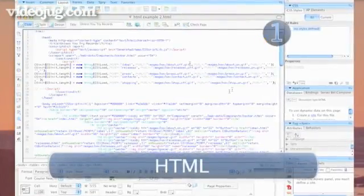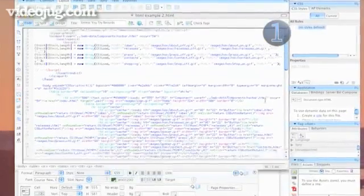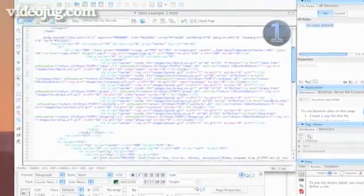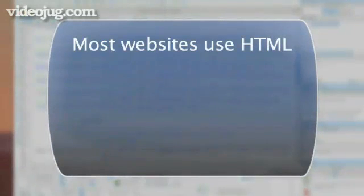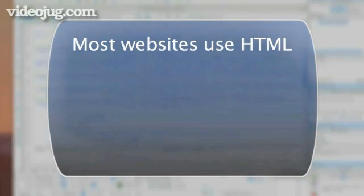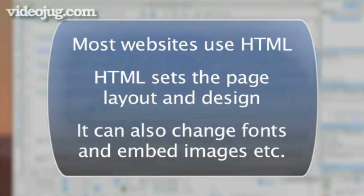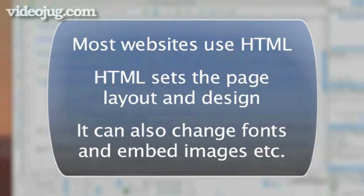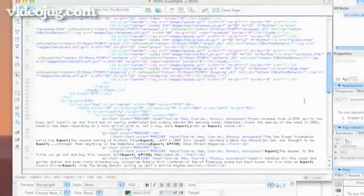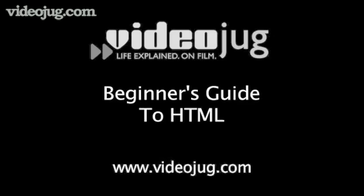Step 1: HTML. HTML is the granddaddy of web coding — it's how it all began. Most websites still use HTML in some way, shape or form, so it's an important language to understand. HTML lays out a web page and dictates how it looks. It can also be used to change fonts and all that sort of thing, as well as embedding images and tables. Watch Videojug's Beginner's Guide to HTML if you want to know more about how it's all laid out.